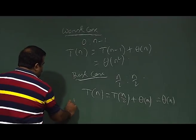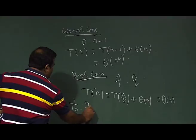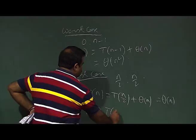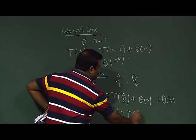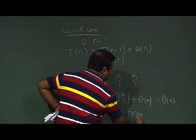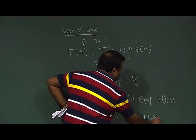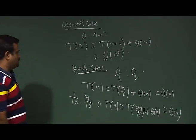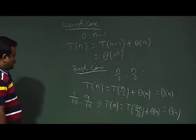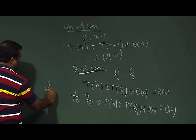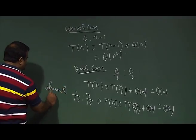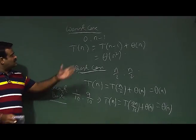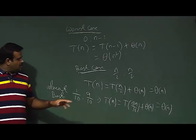Even an almost-best-case partition, like 1/10 to 9/10, gives the recurrence T(n) = T(9n/10) + Θ(n), which again yields Θ(n). So the almost best case is also O(n). But the worst case remains O(n²).